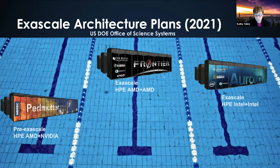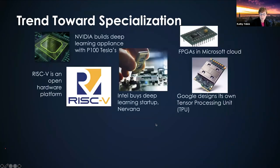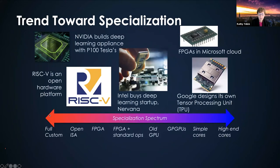Some other countries are pursuing other types of architectural models as they march toward exascale. We're seeing specialization come up all over the place — NVIDIA has put deep learning features into their GPUs even a couple of generations ago. RISC-V is now an open architecture hardware platform developed originally at Berkeley, now commercialized, where the ISA is like open-source intellectual property. ARM is another that can be adapted by adding accelerators, though not an open ISA. FPGAs give you the ability to reconfigure the hardware, and we're seeing things like tensor processing units as well.